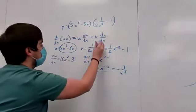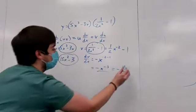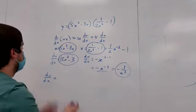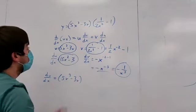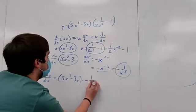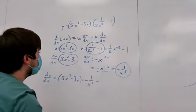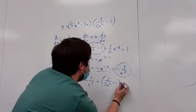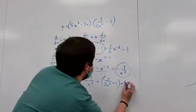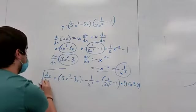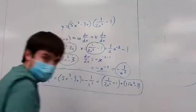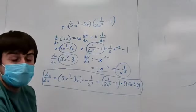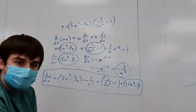Applying product rule: dy/dx = u·(dv/dx) + v·(du/dx) = (5x³-3x)·(-1/x³) + (1/(2x²)-1)·(15x²-3). This is the final answer. Since product rule was specifically requested, be sure to use it and show your work.